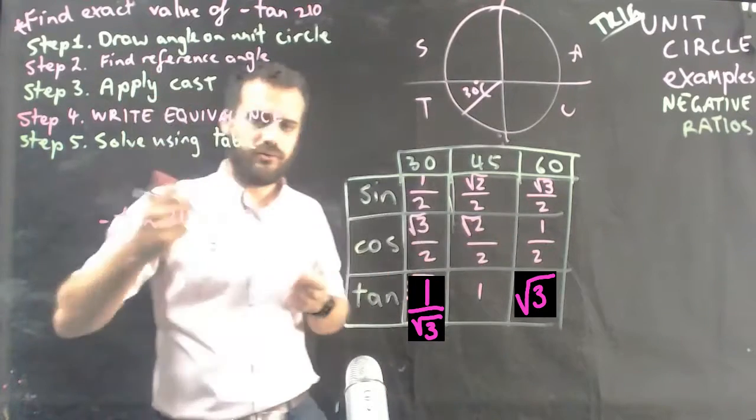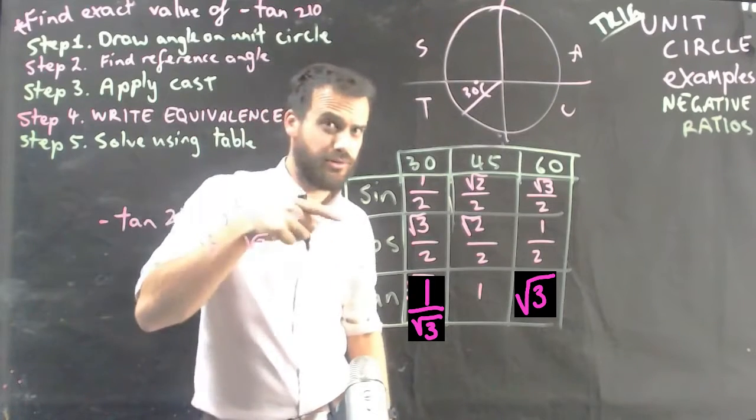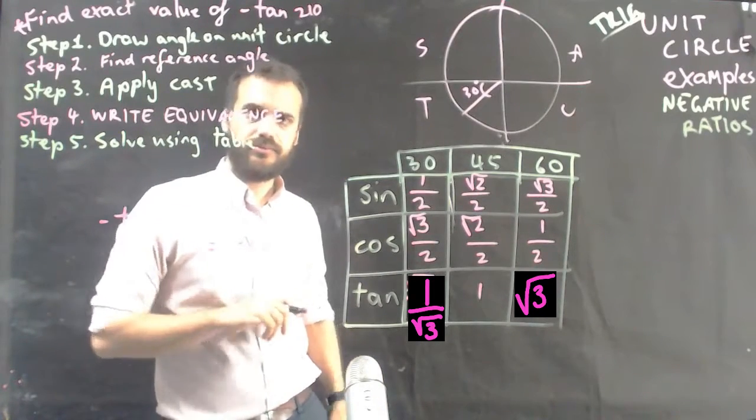And then, finally, solve using the table. Tan 30 is root 3 on 1, which is really just root 3. I hope you've picked that up. Negative. Done.